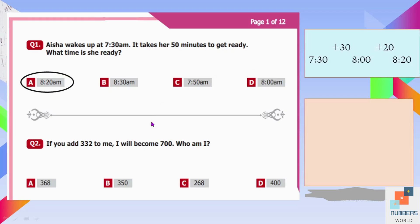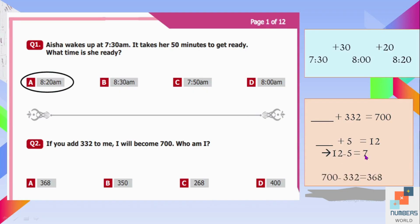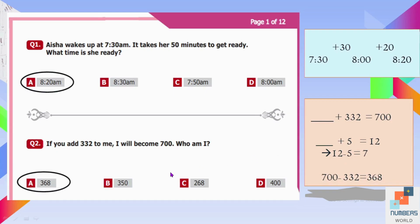Question number two: If you add 332 to me, I will become 700. Who am I? Since we do not know the number, we can write a blank or a variable like x, y, or z. Similarly to finding what is added to 5 to make 12, we subtract 5 from 12 to get 7. We subtract 332 from 700 to get 368. So A is our answer.